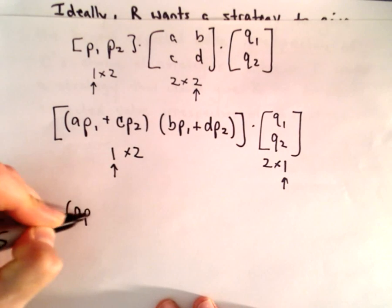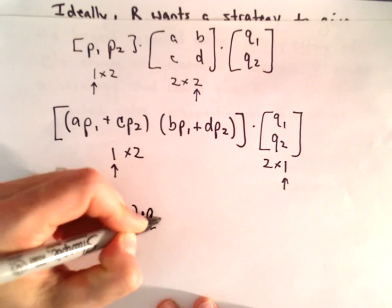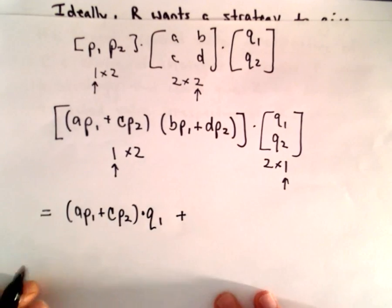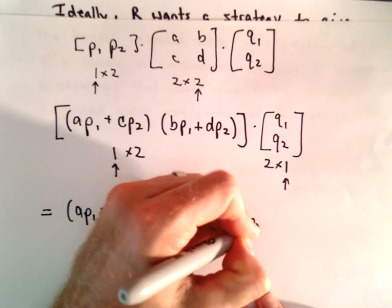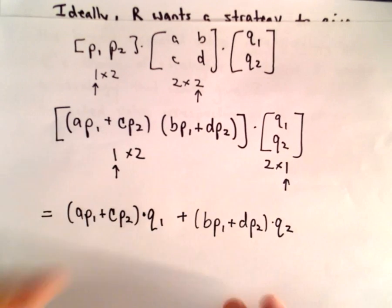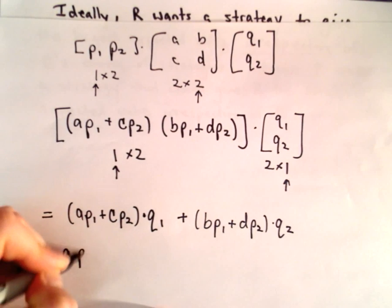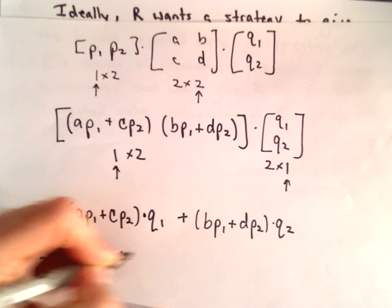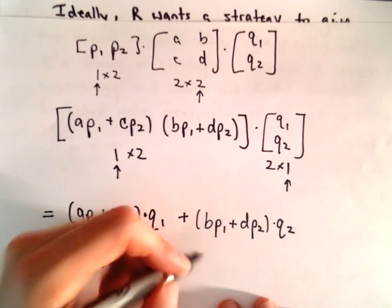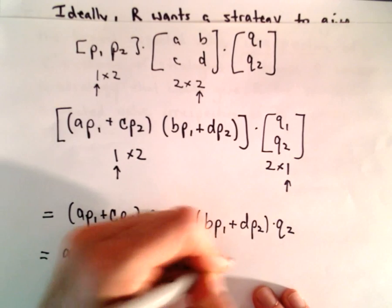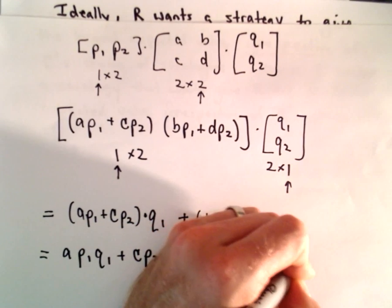So we've got our first entry AP1 plus CP2. We've got to multiply that by Q1. And then we would have our second entry BP1 plus DP2, and we're going to multiply that by Q2. And that's just a matter of distributing. So we would have A times P1 times Q1 plus C times P2 times Q1.